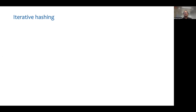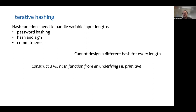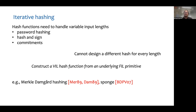Hash functions are one of the fundamental primitives of cryptography that have many different applications. Certain applications, like password hashing, require a hash function to handle different input lengths. However, it is infeasible to design a different hash function for every length. Hence, iterative hashing is used to construct variable input length hash functions using fixed input length primitives. Some popular iterative hashing mechanisms are the Merkle-Damgård construction and the sponge construction.